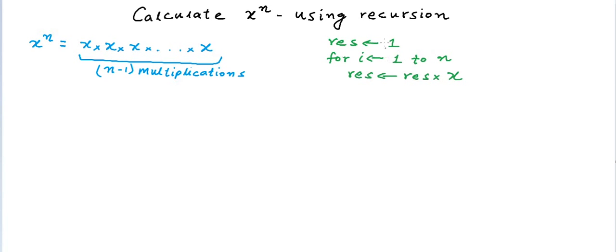In this case you are performing n multiplications because you are initializing the variable to 1 instead of x, but it also handles the case when n equals 0. As we know, x to the power 0 is 1. Since we run just one loop n times, the time taken is proportional to n, so the time complexity of this algorithm is O(n).